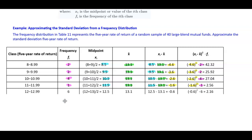The class 12 to 12.99 has a frequency of 6. The midpoint is 12.5 and the sample mean is 13.1. Taking 12.5 minus 13.1 gives negative 0.6. Negative 0.6 squared times the frequency of 6 gives 2.16.